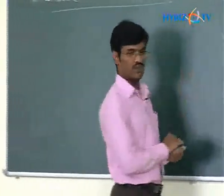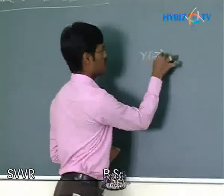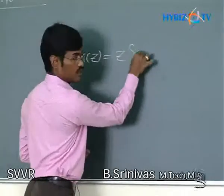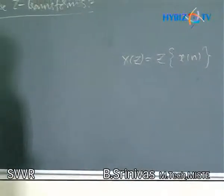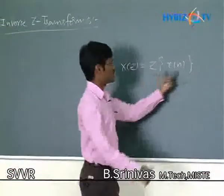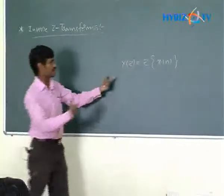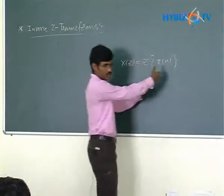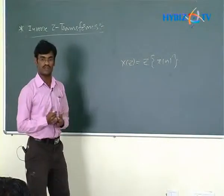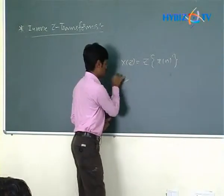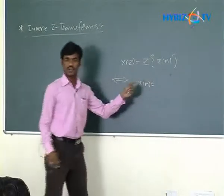Previously, we discussed Z transforms, where X(Z) is the Z transform of the discrete time signal X(n). Now, I want to find X(n) from the Z domain function by taking the inverse Z transform. Similar to Laplace and frequency domain, X(n) equals the inverse Z transform of the Z domain function.